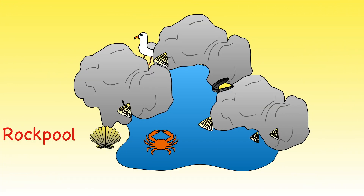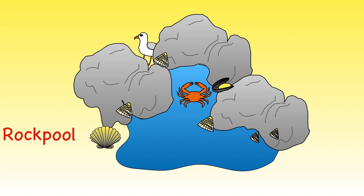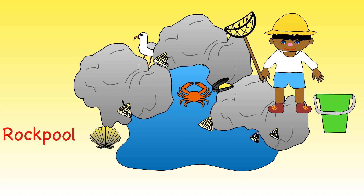As the tide goes out, pools of sea water are left behind and settle amongst uneven rocks. Here you might find creatures such as crabs and sea anemones. Shelled animals such as mussels and barnacles attach themselves firmly to the rocks too. Have you ever tried rock pooling? It's great fun!